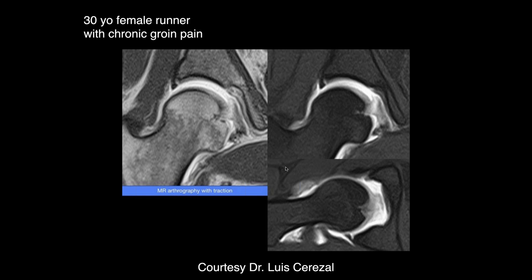A 30-year-old female runner with chronic groin pain. There is significant signal within the ligamentum teres. In the posterior labrum there appears to be some separation — possibly mistaken for a sublabral foramen, but posterior sublabral foramina are not typical, and this likely represents an injury. This is actually a common finding if searched for carefully.